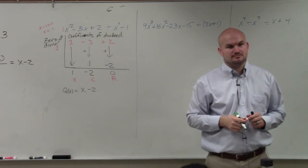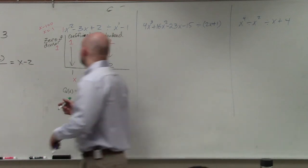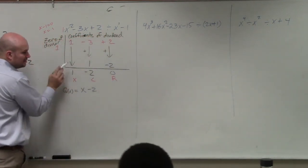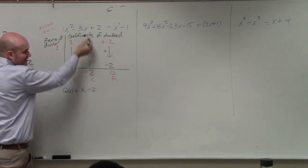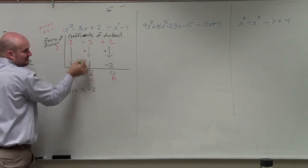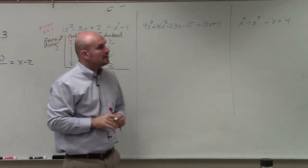What I'm saying is, you bring down the first term, you multiply in the diagonal. When you get the product, you put it to the next row over, and then you add vertically. Negative 3 plus 1 is 2. And then you multiply in the diagonal, go to the next row.